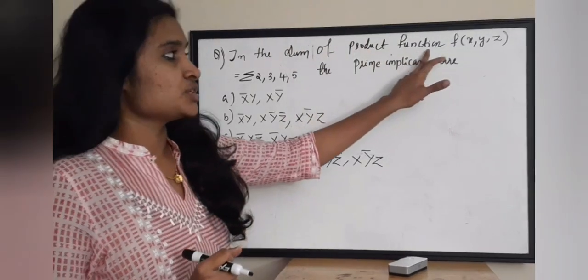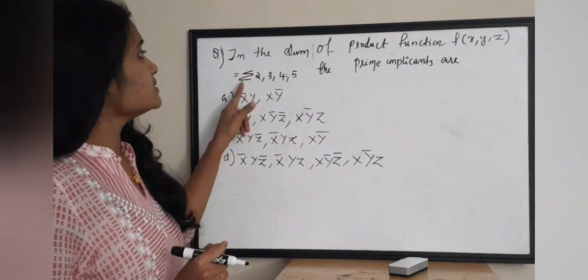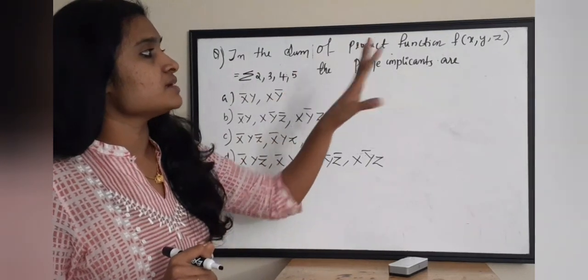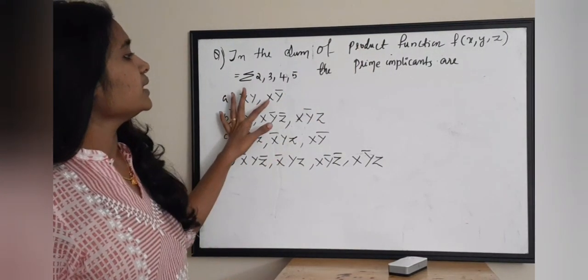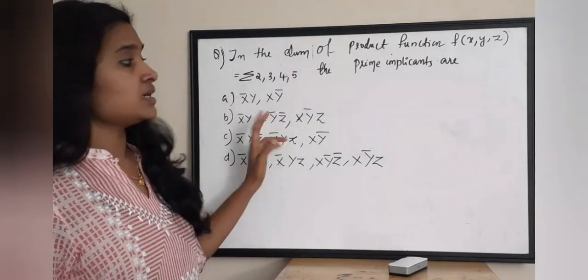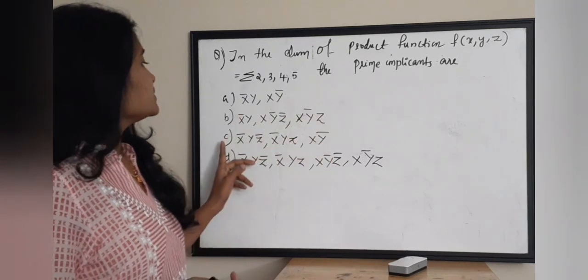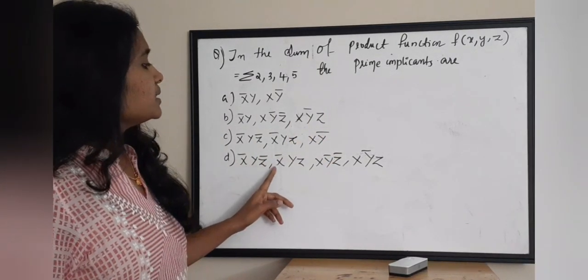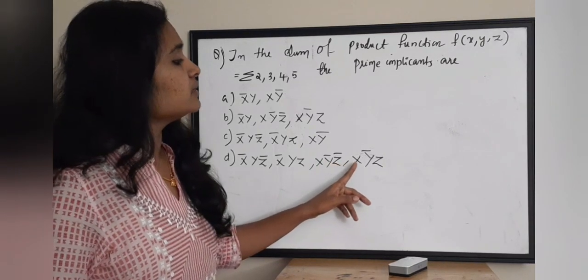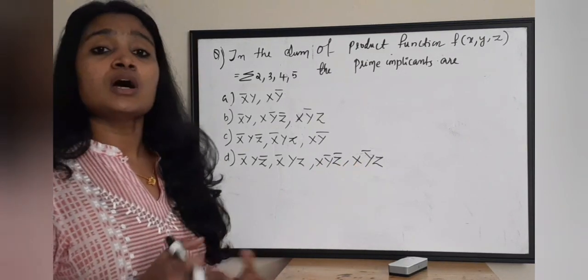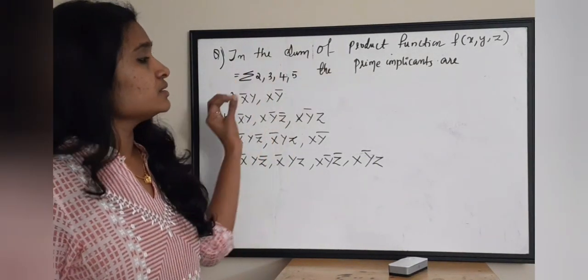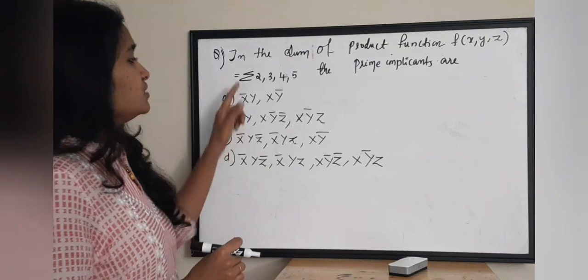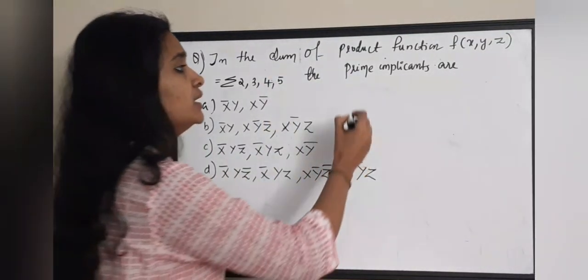The next question: in the sum-of-products function F(x, y, z) = Σ(2, 3, 4, 5), the prime implicants are — option A: x-bar·y, x·y-bar; option B: x-bar·y, x·y-bar·z-bar, x·y-bar; option C: x-bar·y·z-bar, x-bar·y·z, x·y-bar; option D: x-bar·y·z-bar, x-bar·y·z, x·y-bar·z, x·y-bar·z-bar. To find the prime implicants we need to draw the K-map. There are three variables so we draw a three-variable K-map.